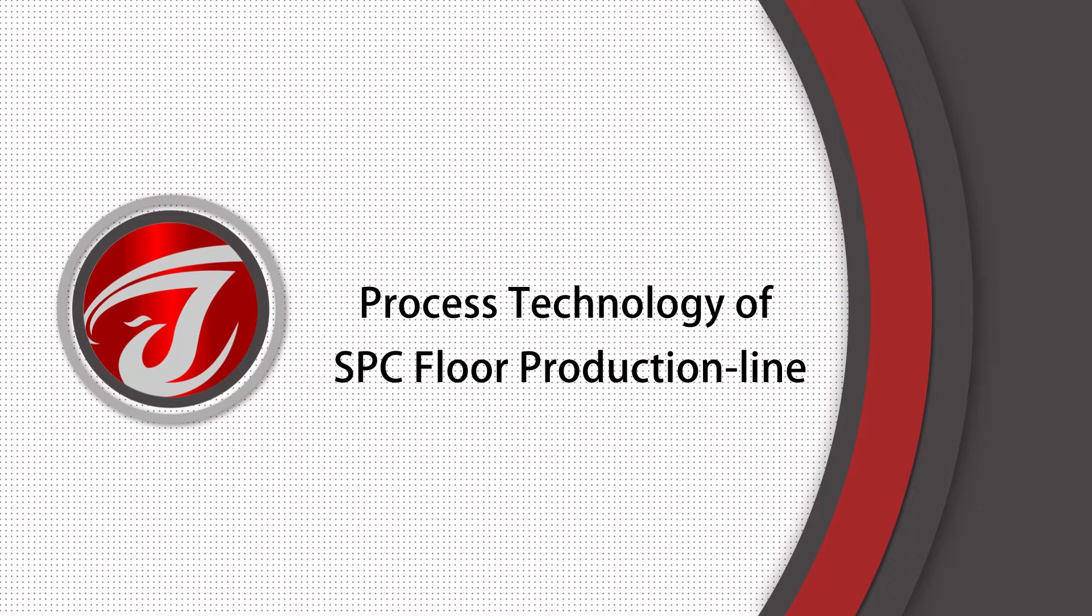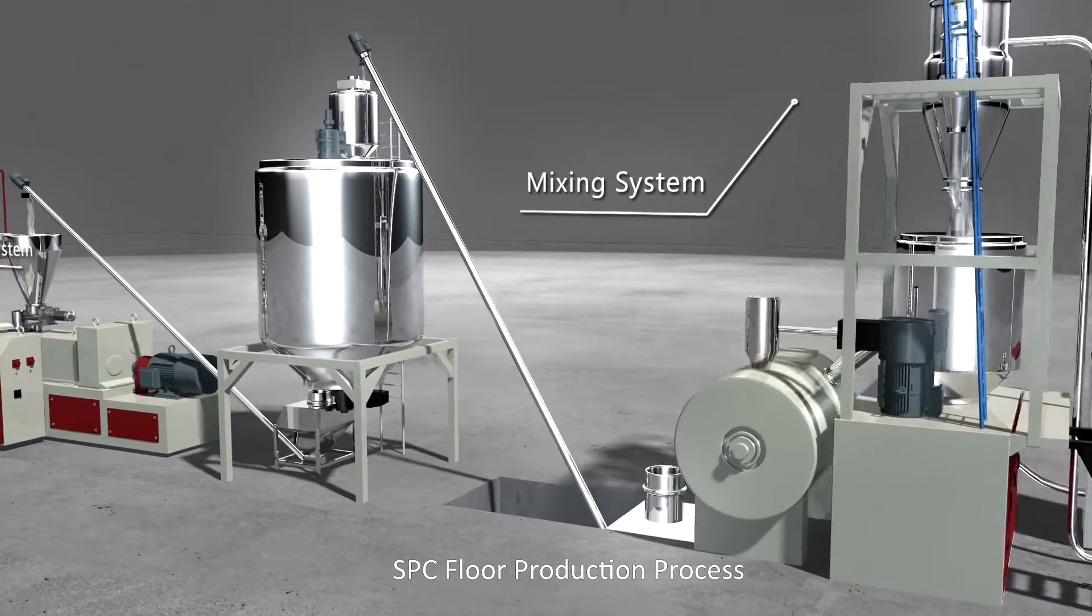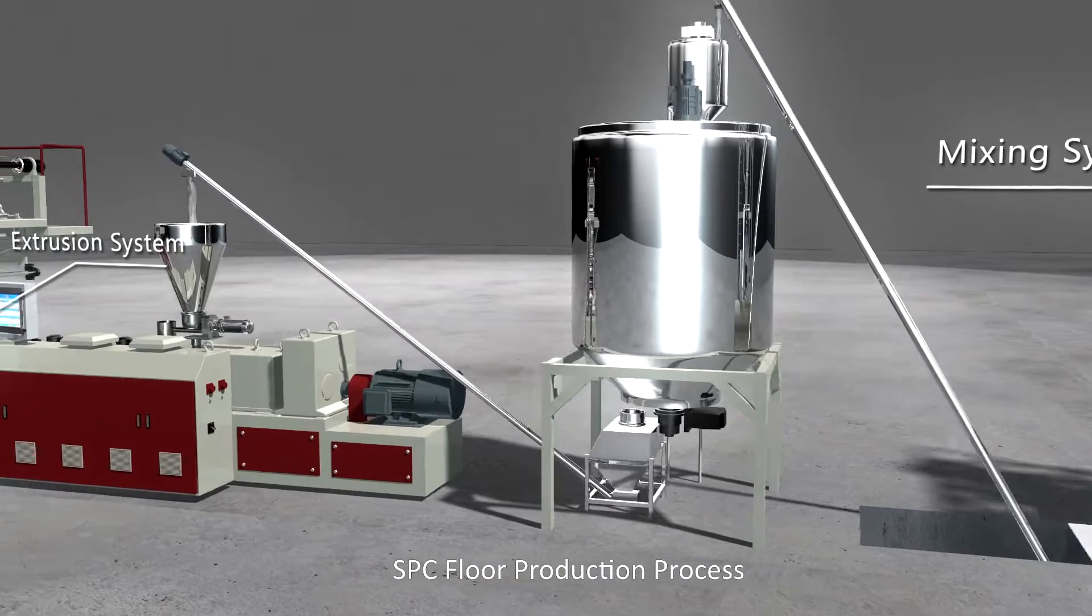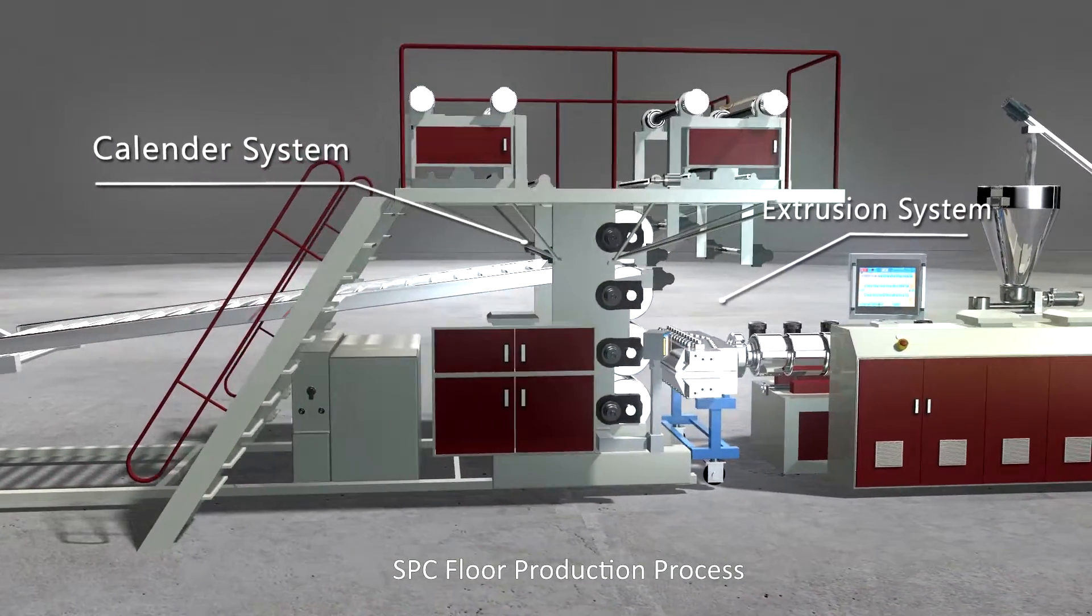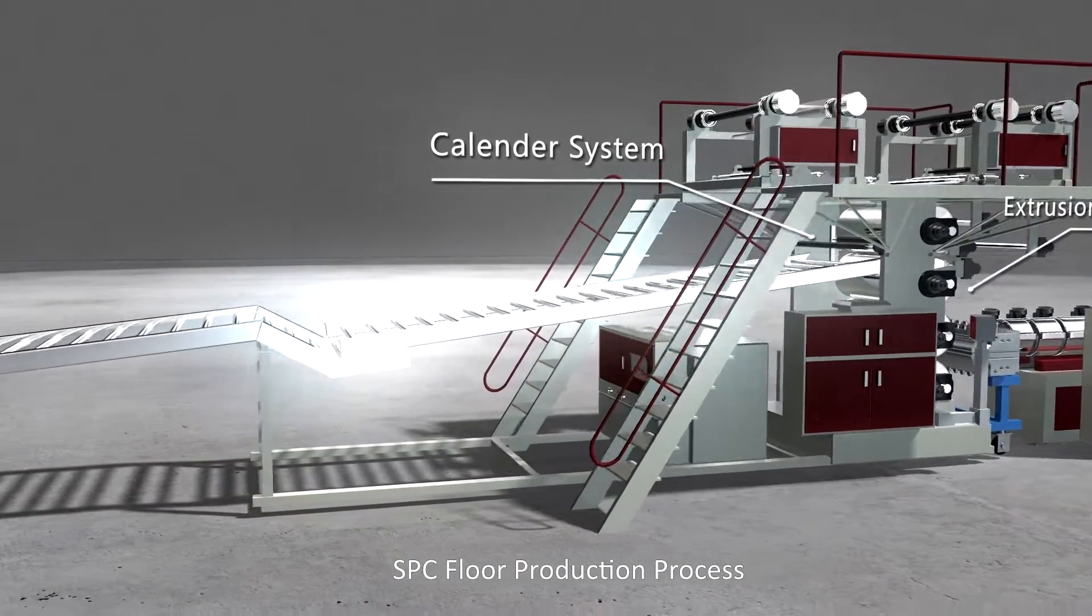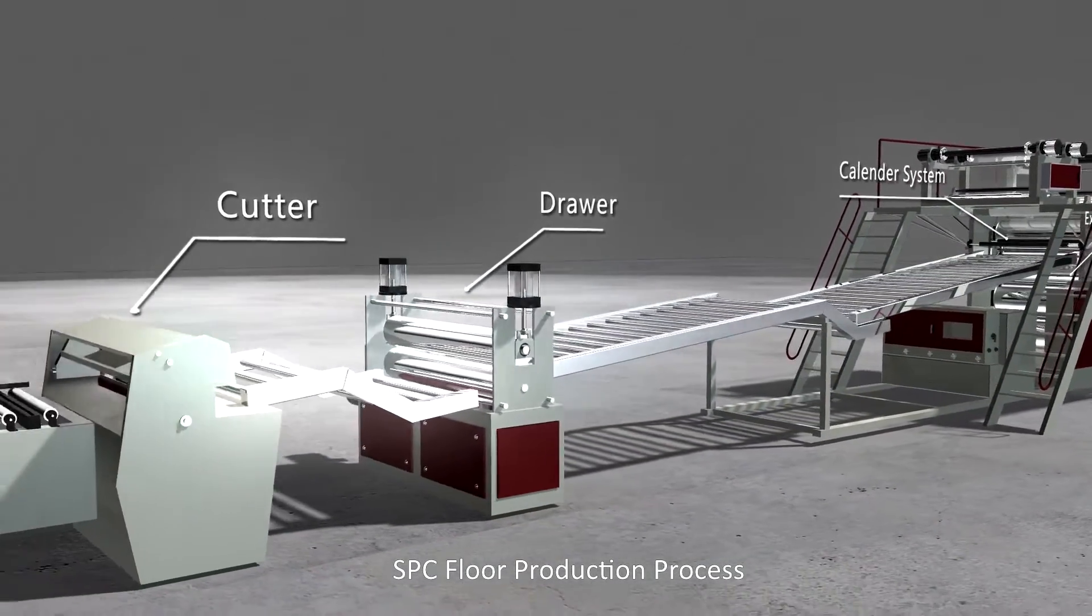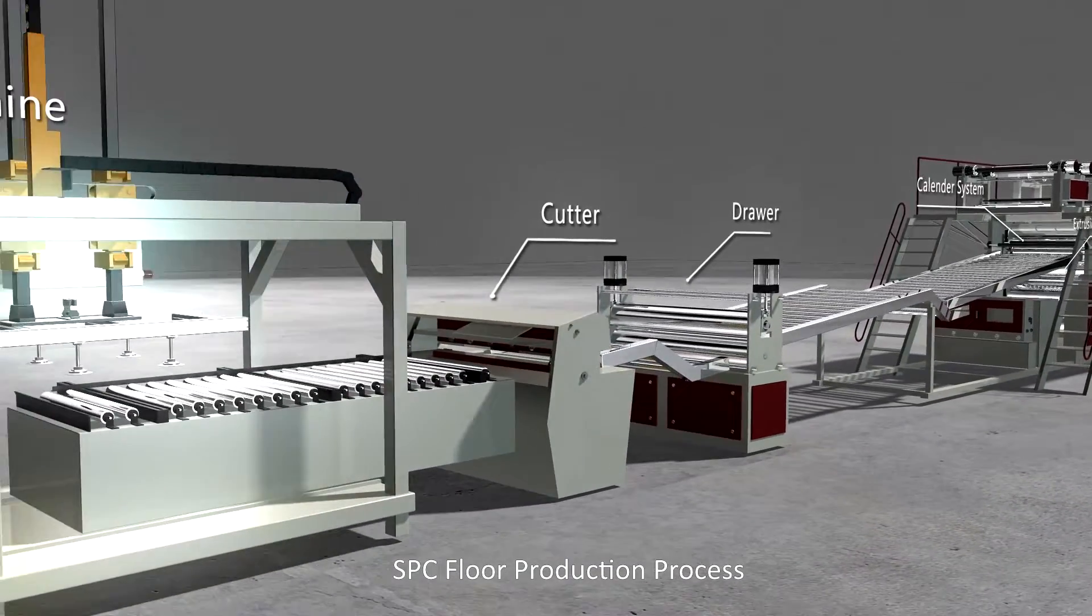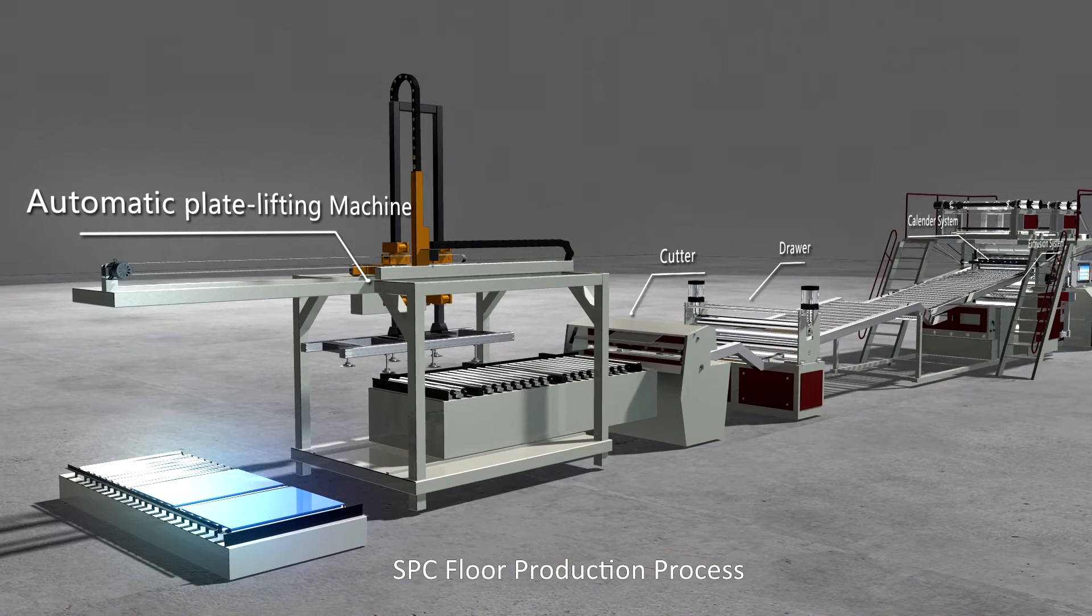SPC floor production process consists of mixing system, extrusion system, drawer, and automatic plate lifting machine, about 6 parts.